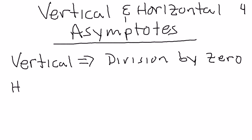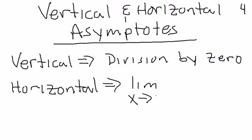You have horizontal asymptotes whenever the limit as x approaches infinity or negative infinity.